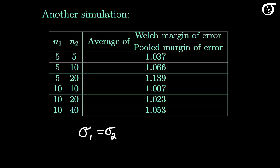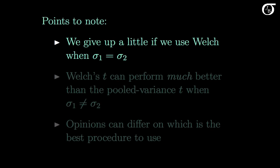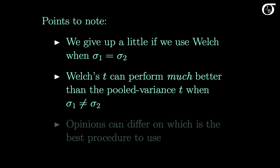In this simulation, I calculated the pooled variance margin of error for a 95% confidence interval and the Welch margin of error for the same sample, then took their ratio across 100,000 samples and averaged the result. The average ratio is greater than 1 across the board, meaning the Welch procedure results in a larger margin of error — which is bad. But it's not that bad; the ratio is fairly close to 1, and as sample size increases it gets quite close to 1. So we give up a little if we use Welch when standard deviations are equal, but only a small amount.